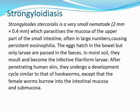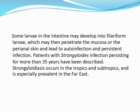The female worms are embedded deep in the intestinal mucosa - while hookworms attach their mouth to the mucosa and suck blood, Strongyloides penetrates deep into the mucosa. Some larvae in the intestine may develop into filariform larvae which then penetrate the mucosa or perianal skin, leading to auto-infection and persistent infection. Patients with Strongyloides infection persisting for more than 35 years have been described.